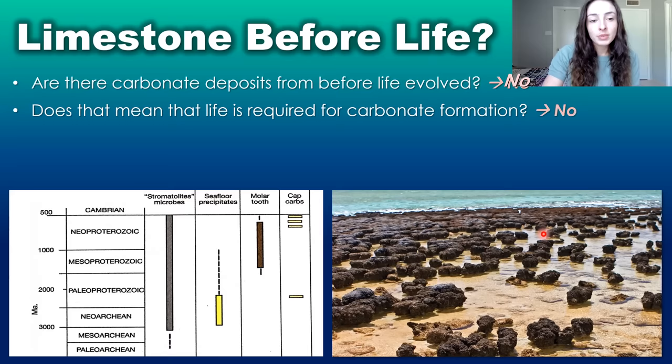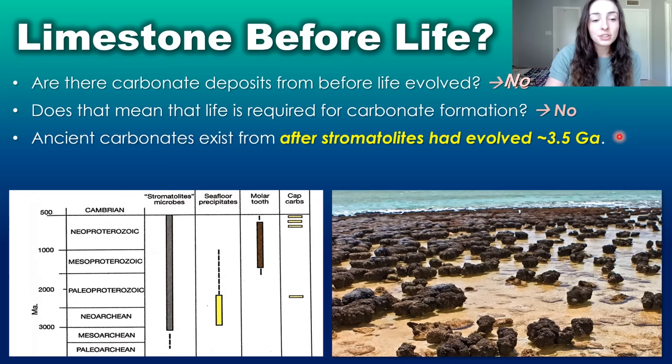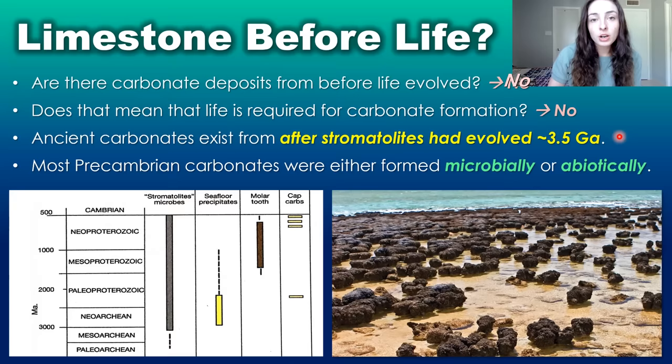Ancient carbonate deposits exist in the rock record from after stromatolites had evolved around 3.5 billion years ago. But even so, it's not necessarily that stromatolites were required for Precambrian carbonate deposition or pre-500 million year ago carbonate deposition. Most Precambrian carbonates, in fact, were either formed abiotically or microbially — so both ways.